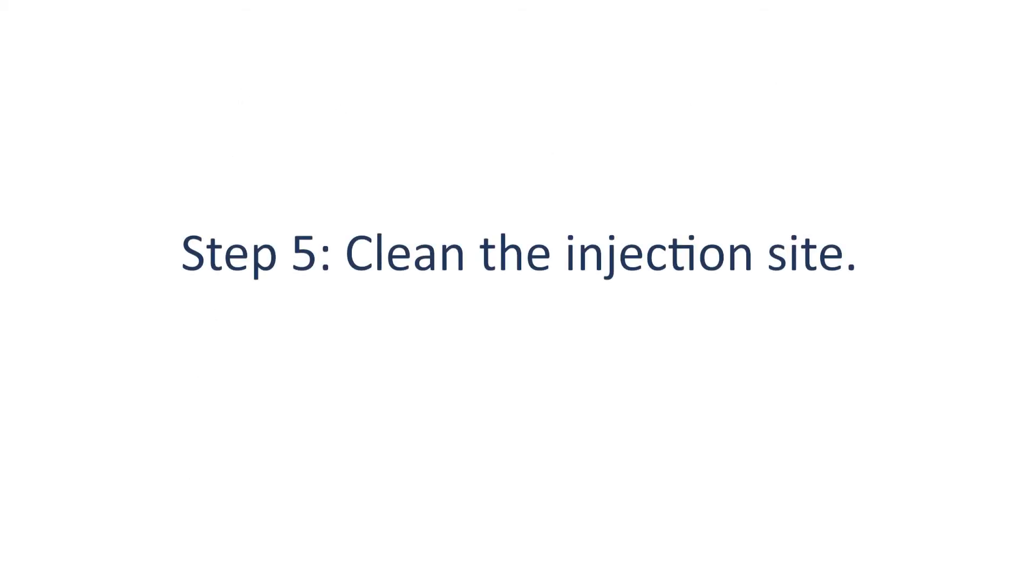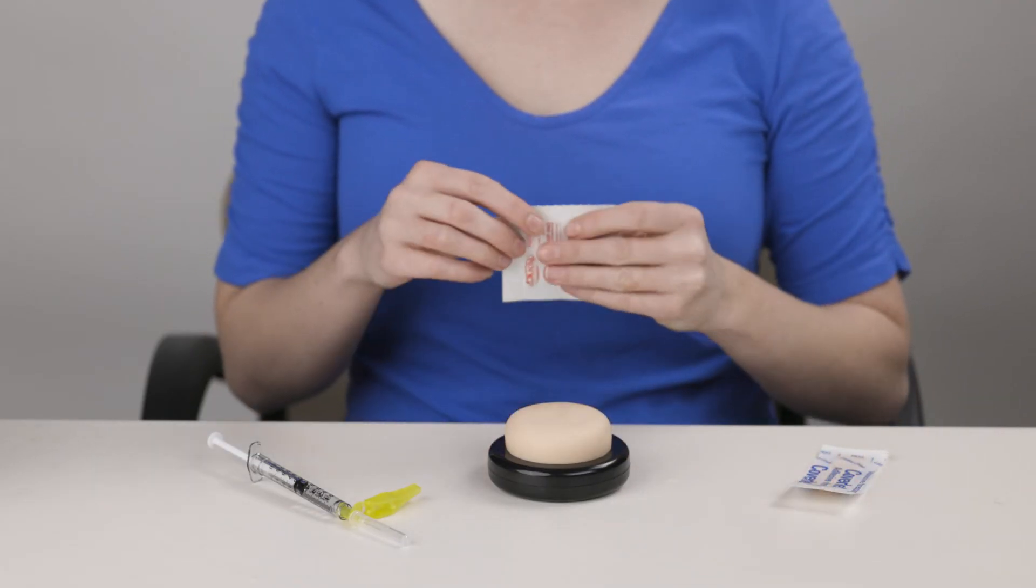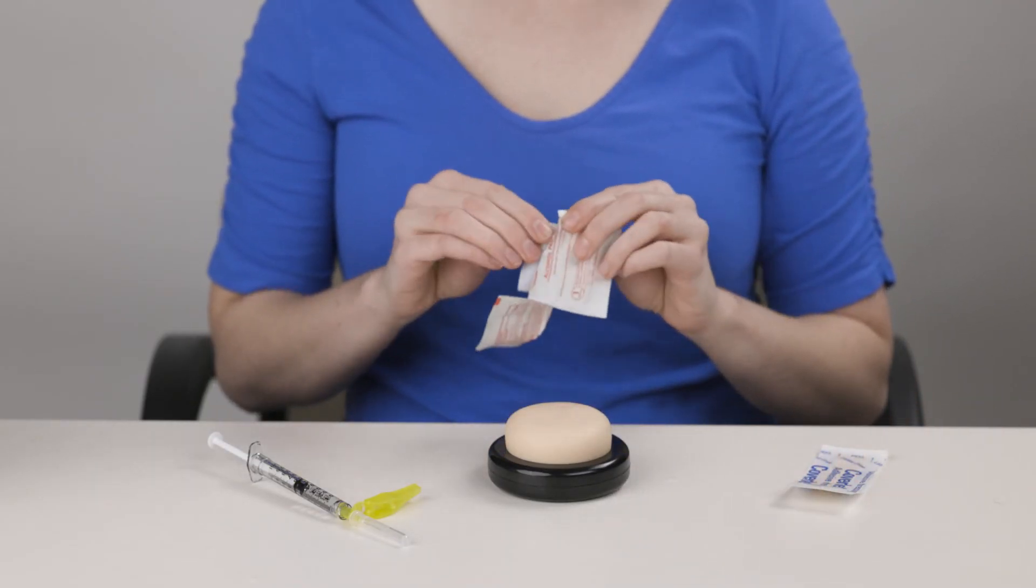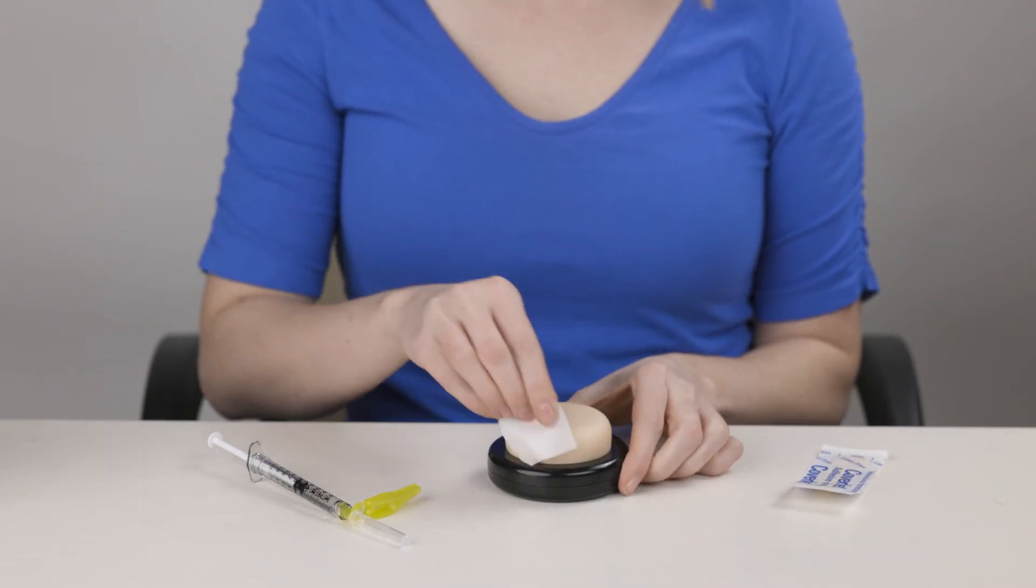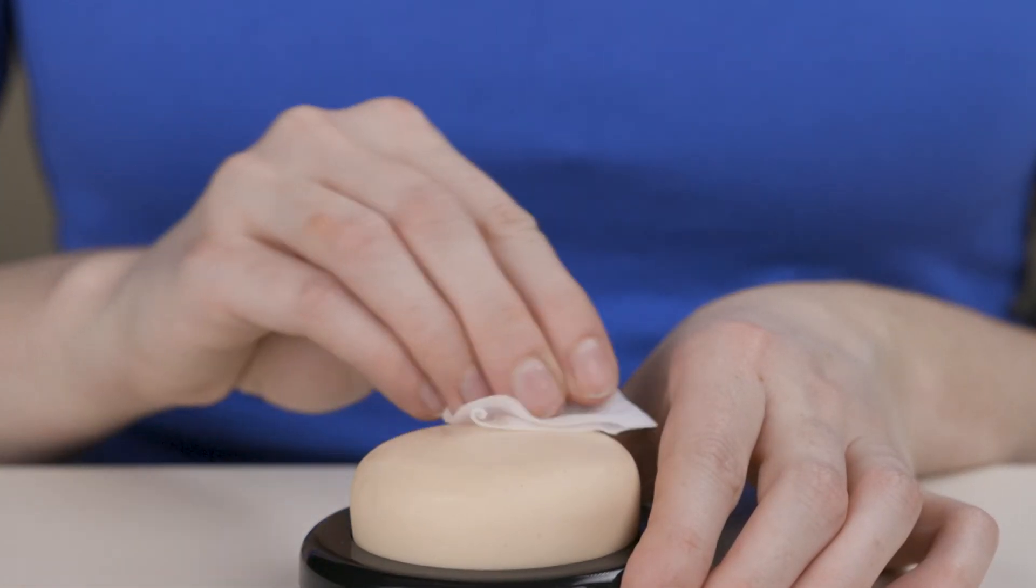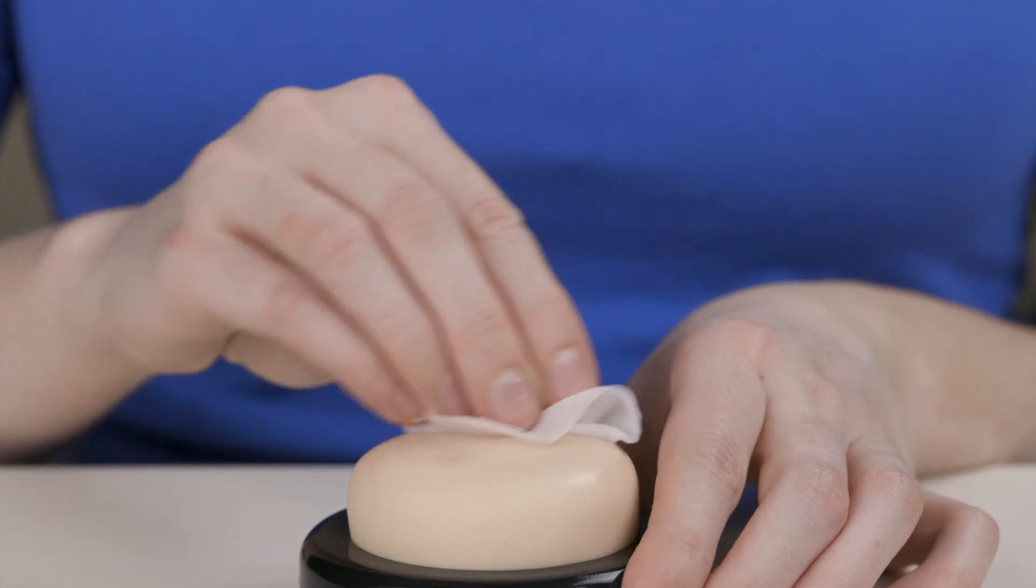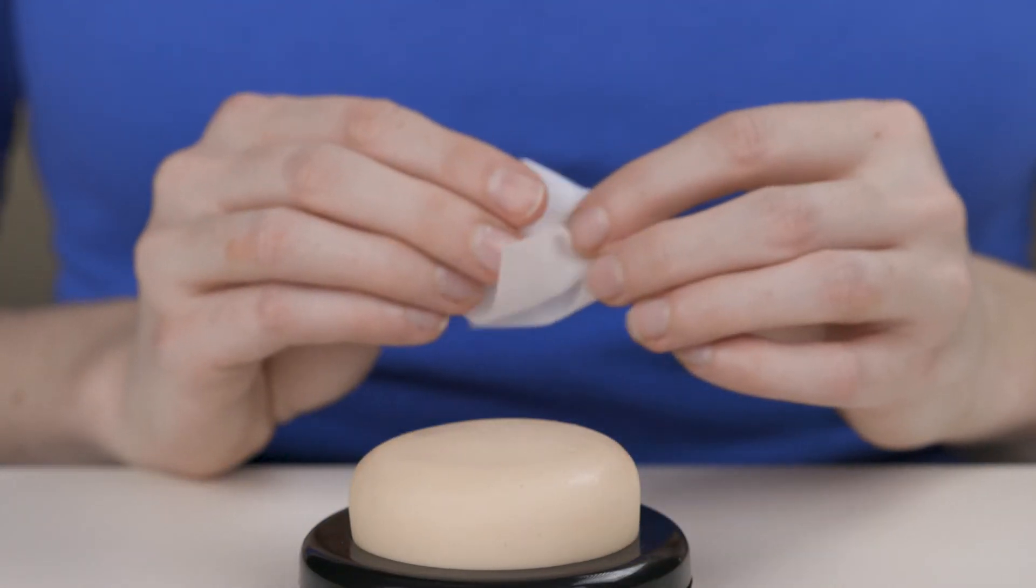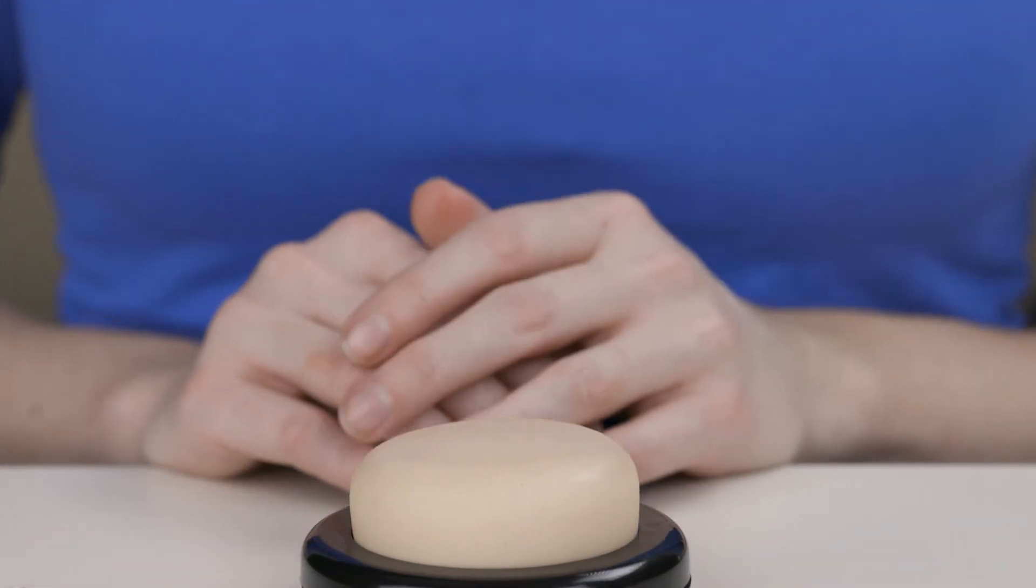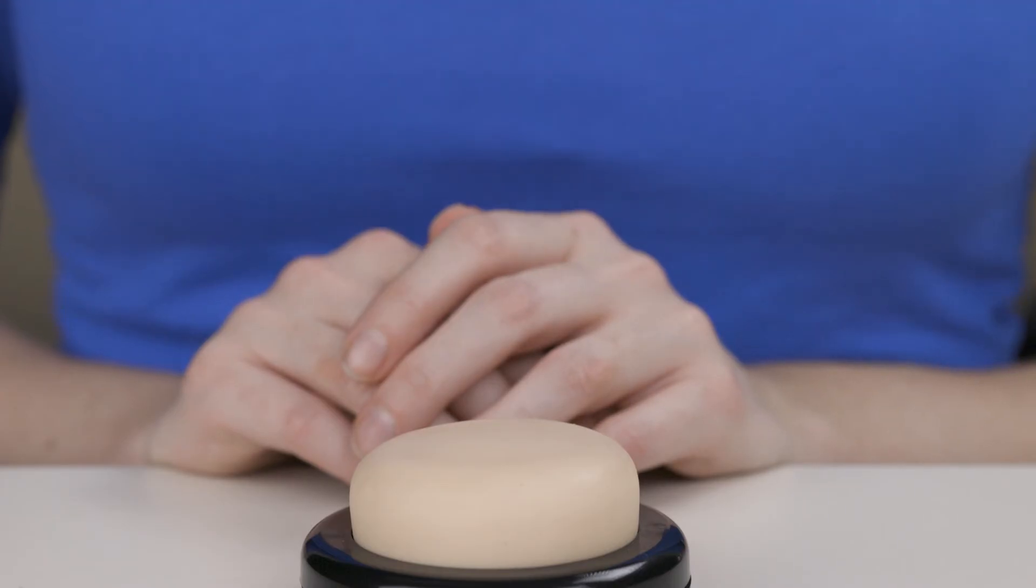Step five, clean the injection site. Open the alcohol wipe and clean the injection site with the wipe. Wait a few seconds to allow your skin to air dry. Don't touch or blow on your skin.